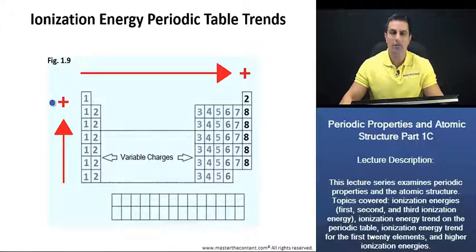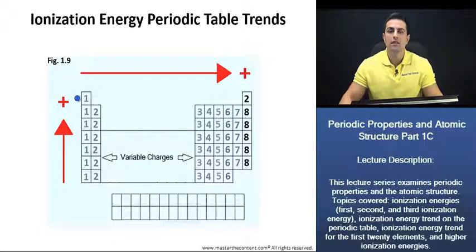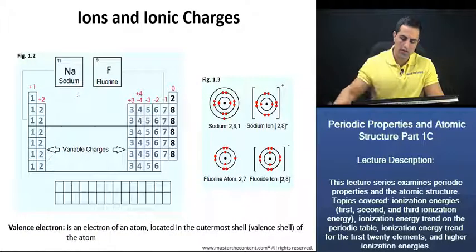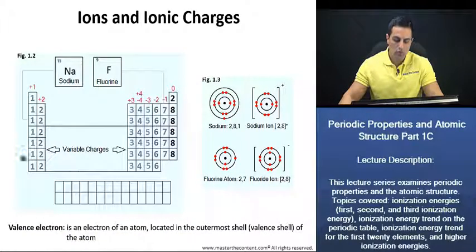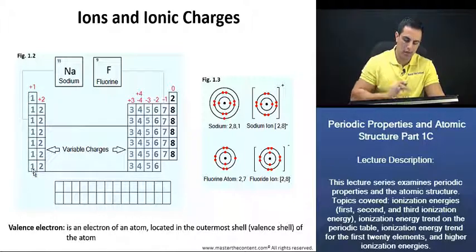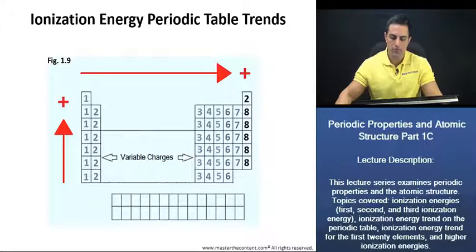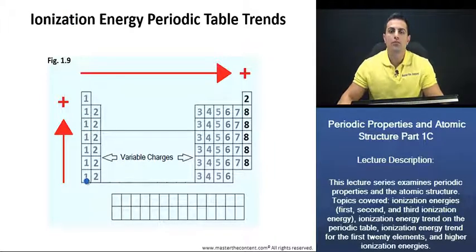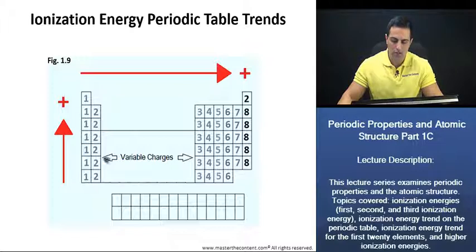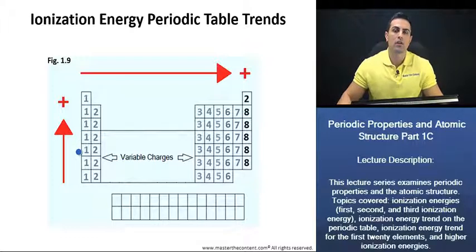If you recall in part one B of this lecture series, we had demonstrated that group one elements have one valence electron. To obtain a full outermost shell, they would rather give up that one electron than gain electrons. Thus, on the left side of the periodic table, we can generalize that these elements are going to give up their electrons rather than gain electrons.